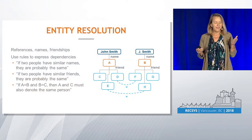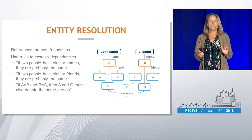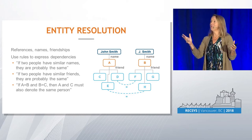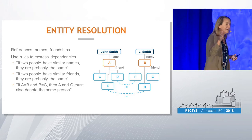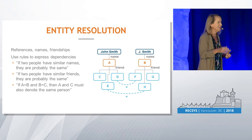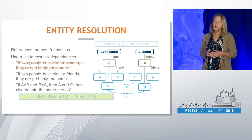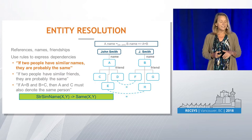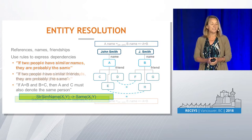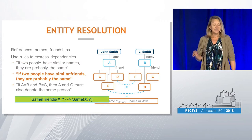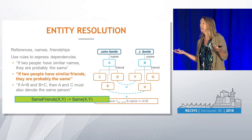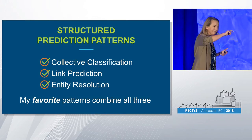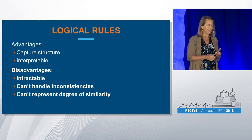My favorite kind of pattern is one where you combine all of them together — doing collective classification, link prediction, and entity resolution all at once. These patterns have some advantages, but also some disadvantages when presented as logical rules: they're intractable, they can't handle inconsistencies, and particularly for recommender system settings, they can't handle similarities — they're 0-1, same or not same. So what I'm going to do now is introduce some tools for really dealing with these kinds of patterns.